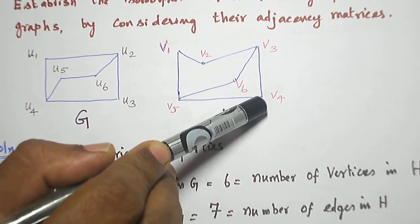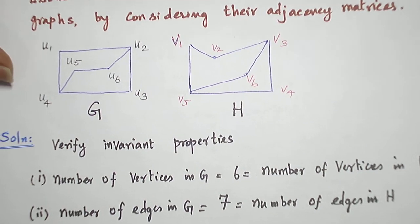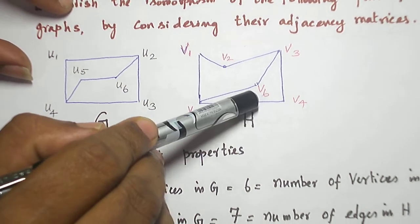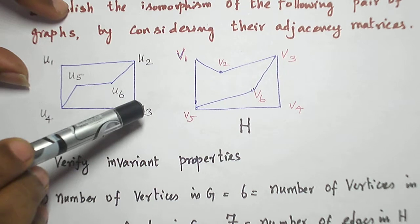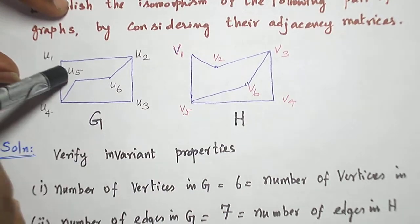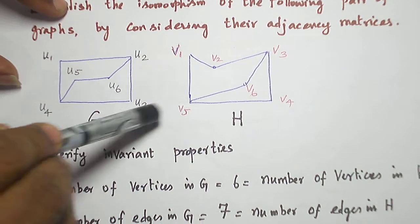Similarly, V4 is another vertex that is adjacent to degree-3 vertices on both sides. So, I can map U1 to V6, U1 to V4, or U3 to V6, U3 to V4.